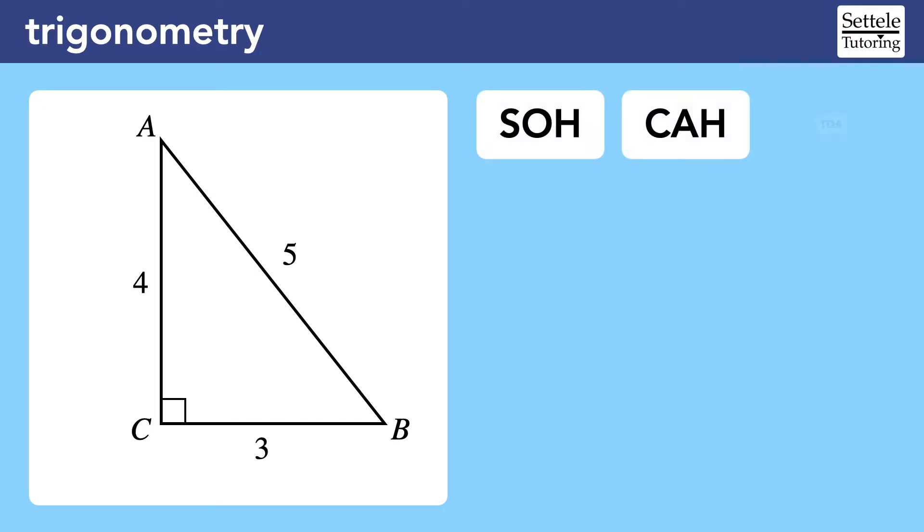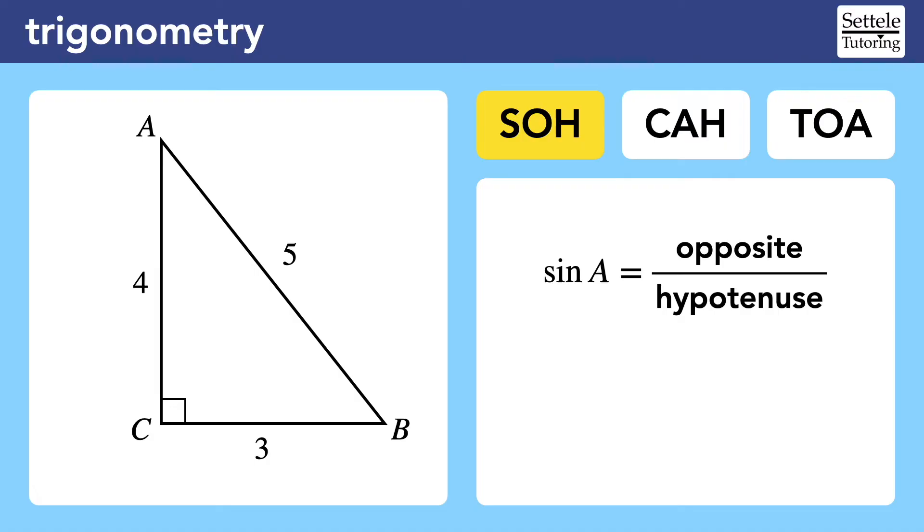Let's give these sides actual lengths so that we can see how SOH-CAH-TOA works. SOH tells us that the sine of an angle is equal to the opposite side divided by the hypotenuse. To understand this formula, we need to look at three things. First, make sure you're focused on the correct angle. In this case, we are told to look at angle A. The opposite side would be 3, and the hypotenuse is 5. So the sine of A is equal to 3 fifths.